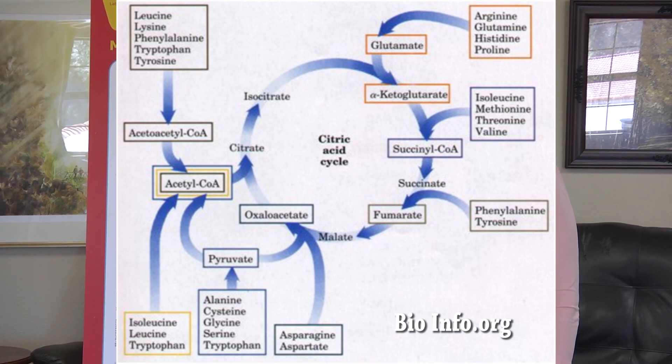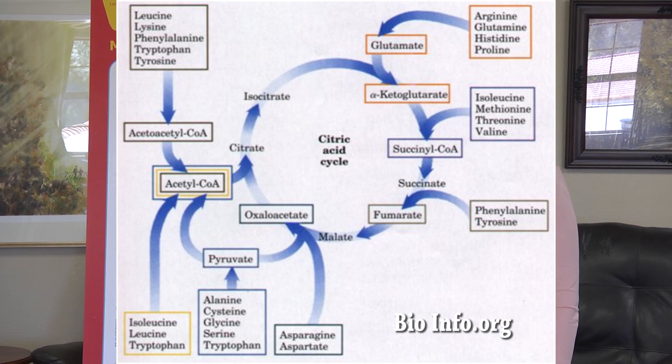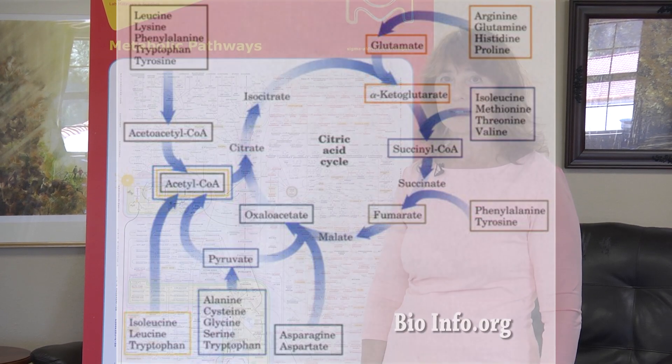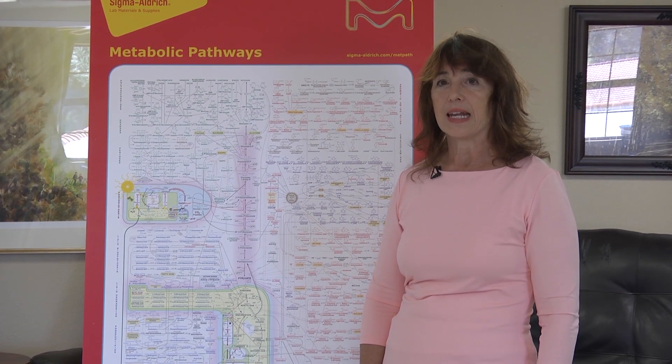I will mention them briefly with a mnemonic: "Can I keep swimming swiftly for miles on course?" But don't worry about that part unless you're enrolled in a biochemistry curriculum. More importantly is that we arrive to the citric acid cycle at all.